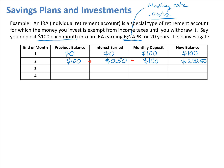At the end of month 3 we have a balance of $200.50. We multiply that by the monthly rate of 0.06 divided by 12 and get approximately $1.00 in interest — it's not exactly a dollar but we round to the nearest cent. We add another $100 deposit at the end of the month, so adding the previous balance, interest earned, and monthly deposit, we now have $301.50 in the account.